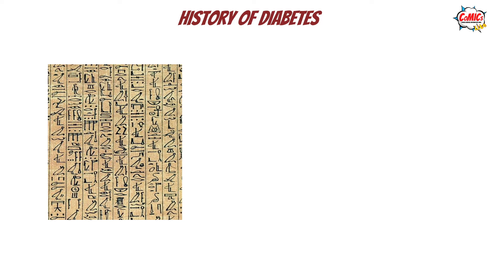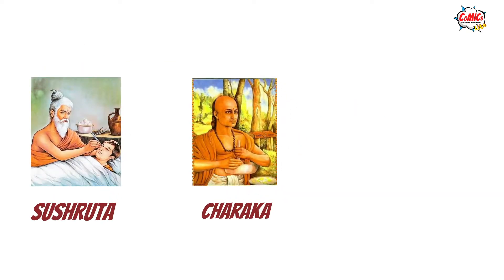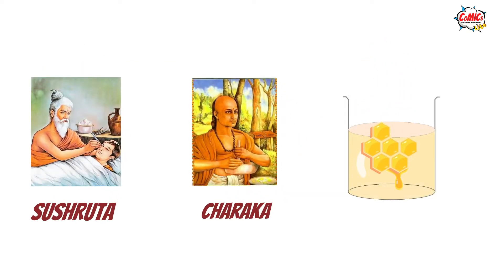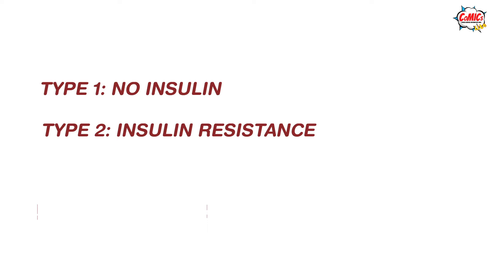Diabetes was mentioned as early as 1500 BC in Egyptian manuscripts. It was characterised by high volumes of urine production. Indian physicians called it matumeha, or honey urine, as it attracted ants. The two types of diabetes, type 1 and type 2, were also identified very early on.